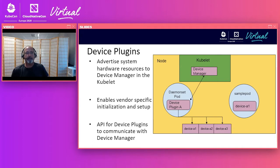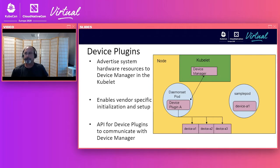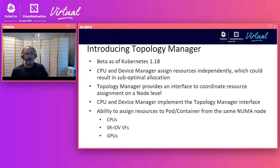Kubernetes has a device plugin framework. Devices can use it to implement plugins for GPUs, NICs, FPGAs, and other device resources requiring vendor-specific setup and configuration. With the device plugin, you can advertise system hardware resources to the Kubelet, which will be used to assign resources to the container. However, these CPU and device allocations are done independently with no coordination, meaning the allocations could come from different NUMA nodes.